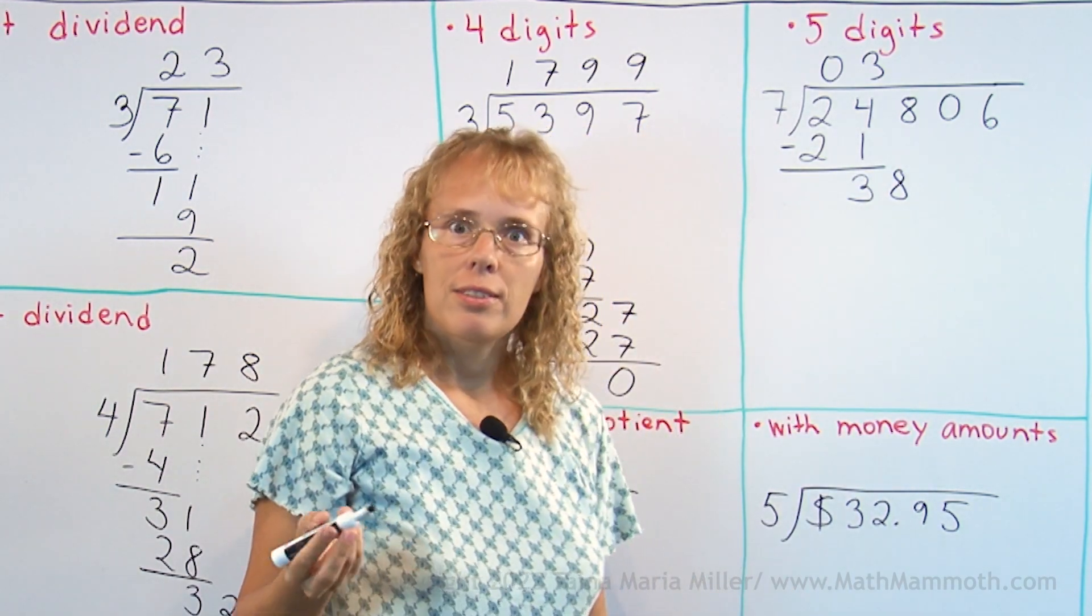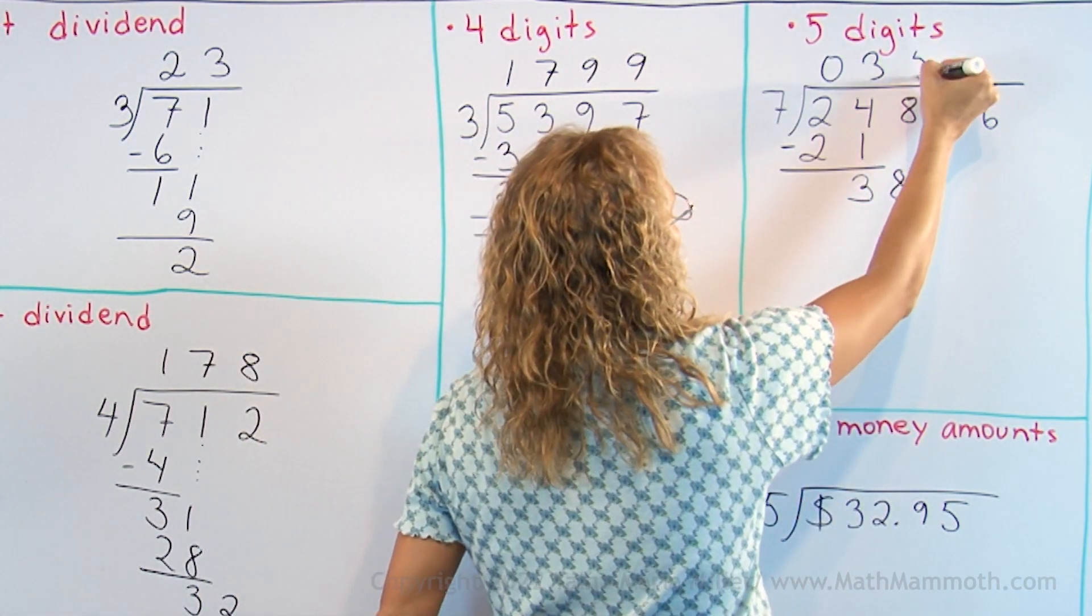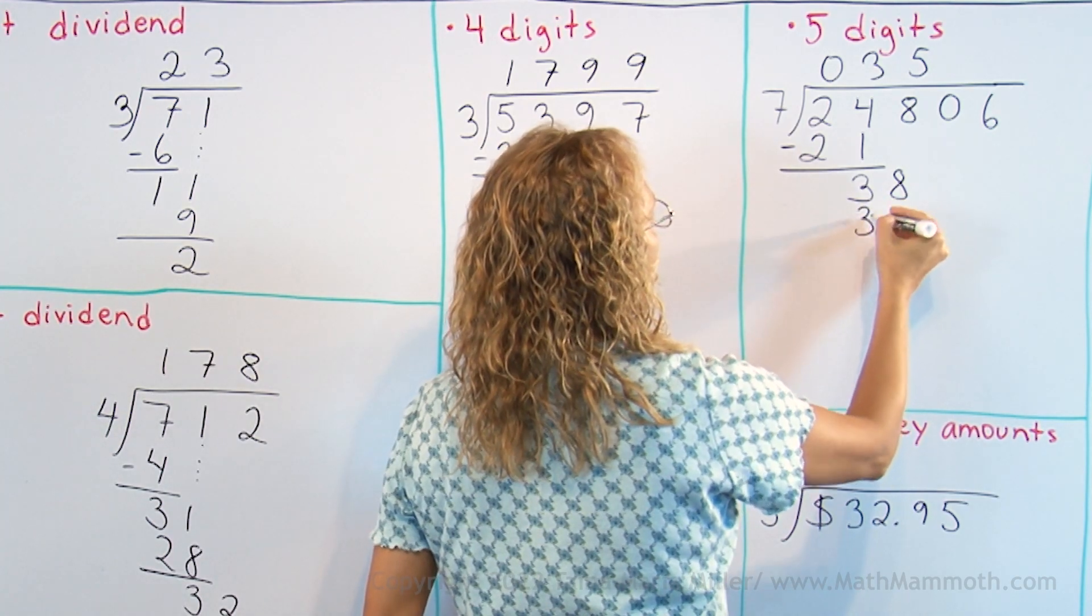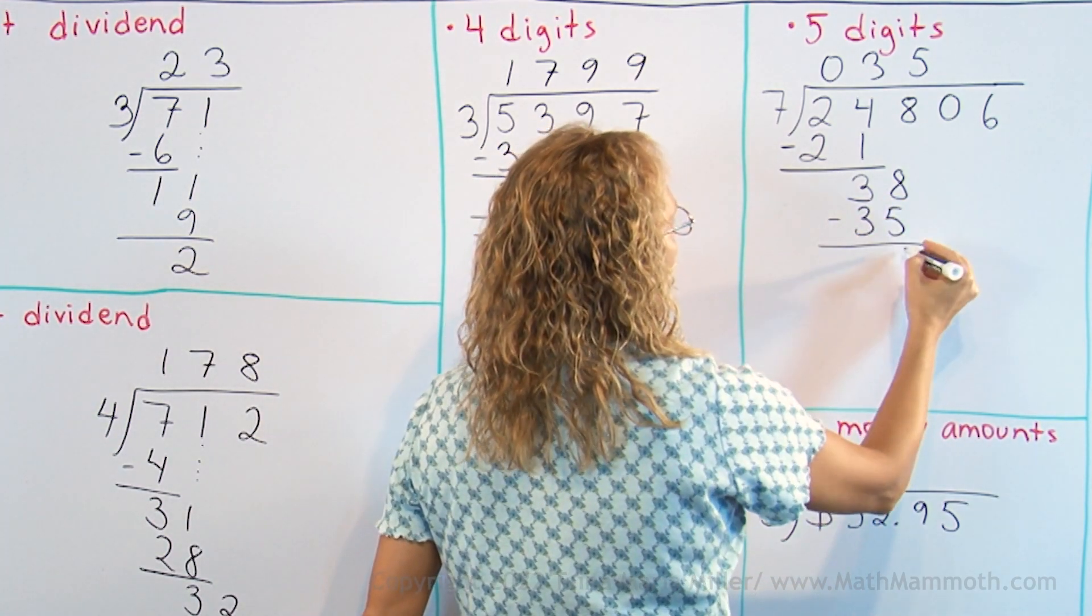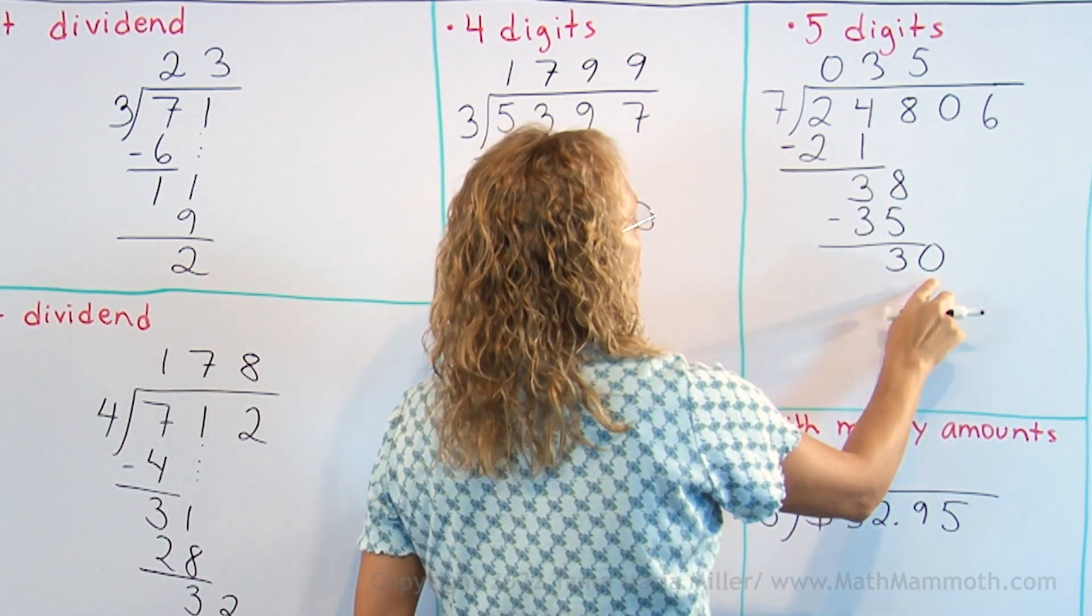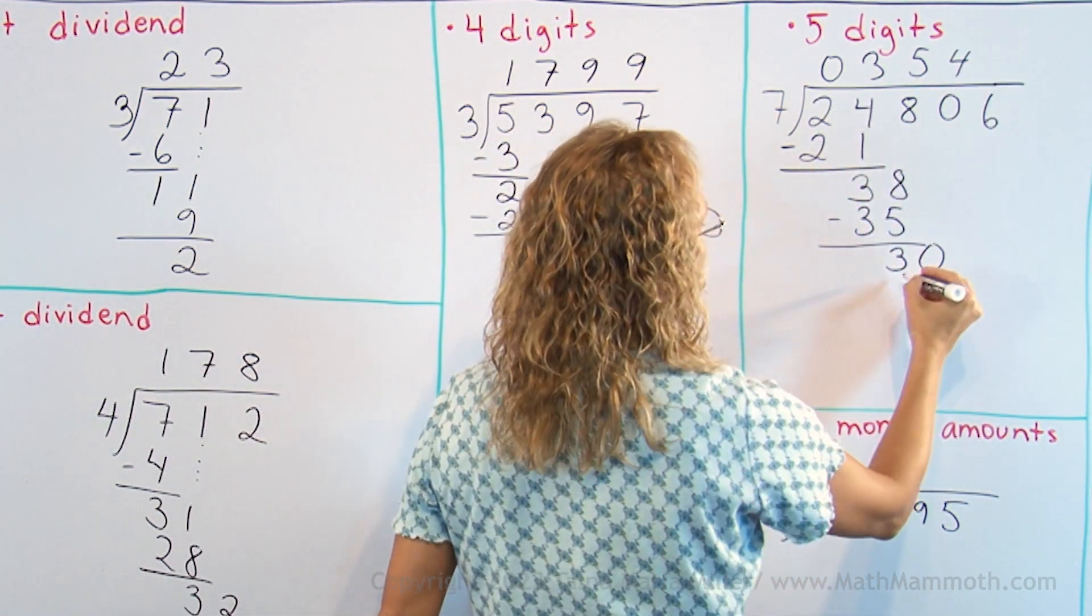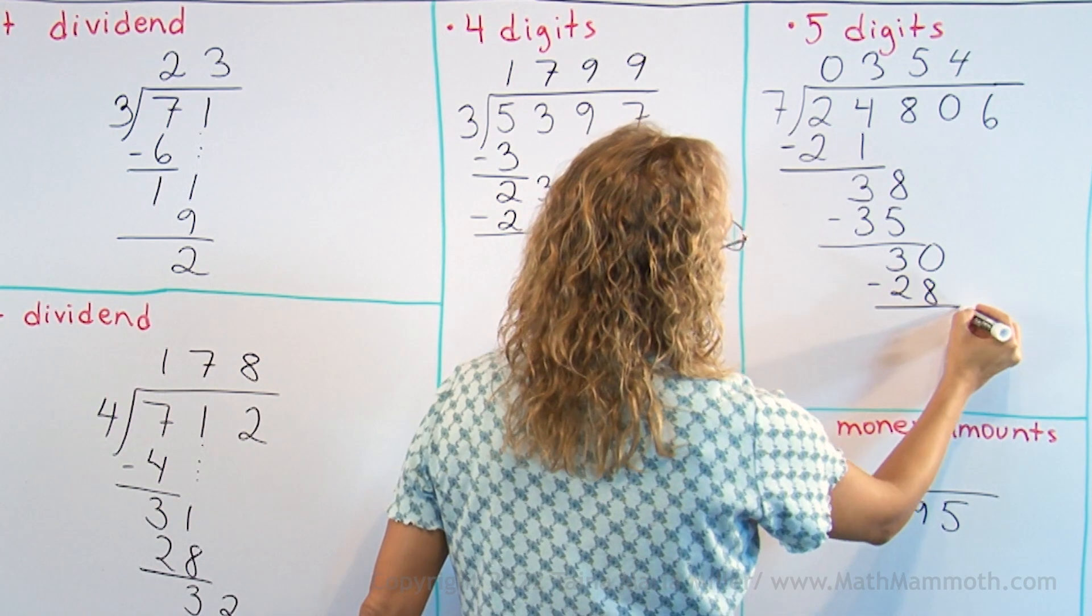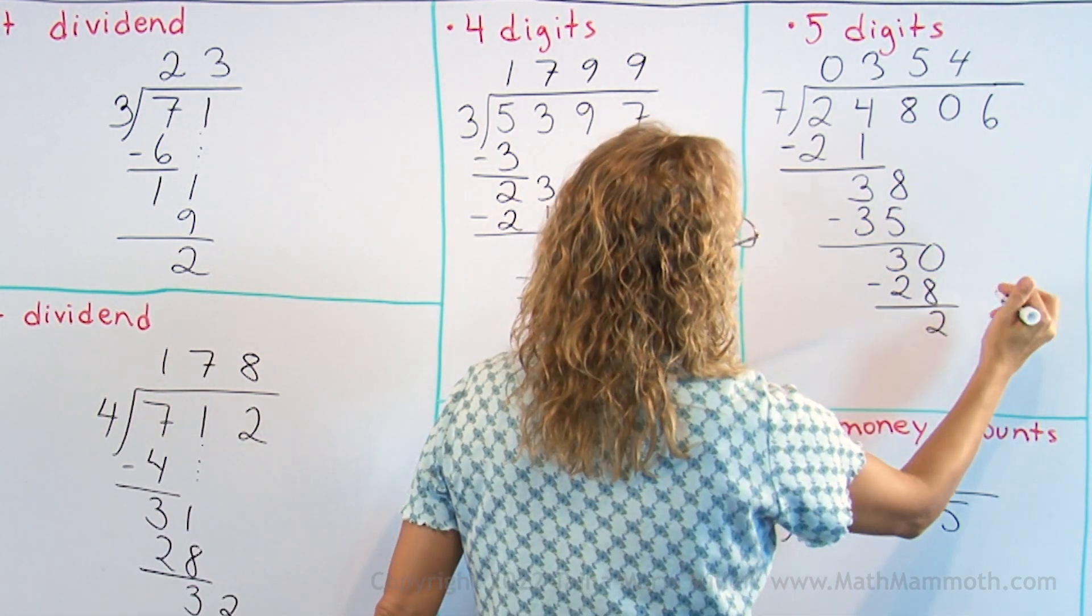7 goes to 38, 5 times. 5 times 7, multiply, 35, subtract, 3, drop down 0. Then 7 goes to 30, 4 times, or times 7, 28, subtract again, 2, drop down 6.